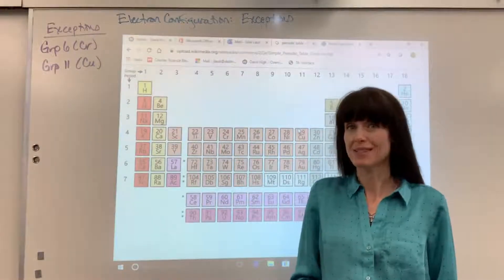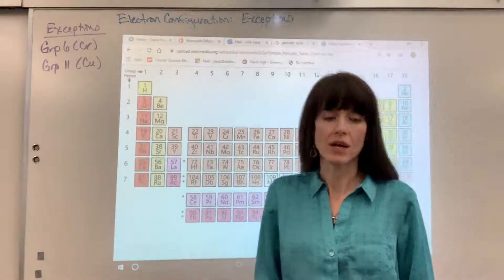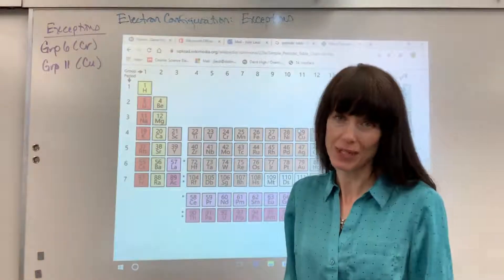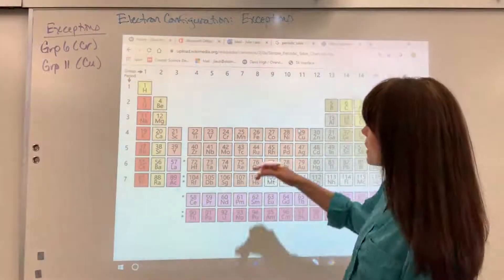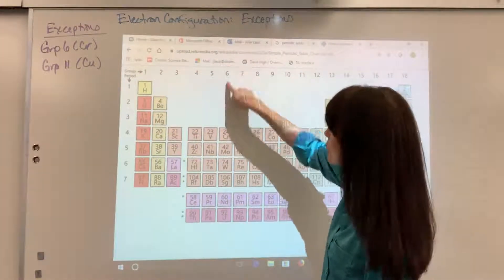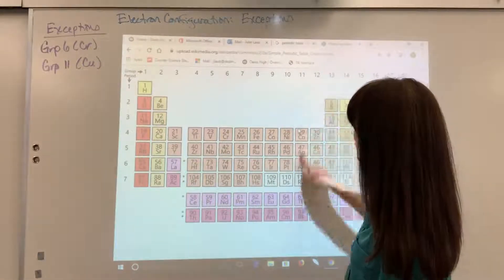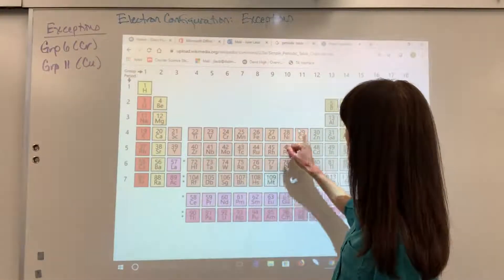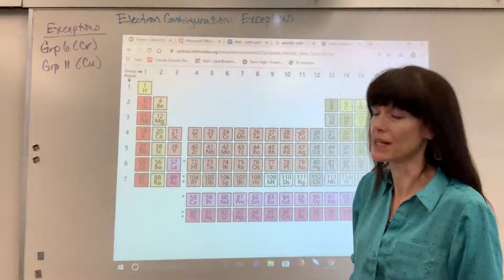There are a few exceptions on the electron configuration, something that you wouldn't expect. These exceptions are going to happen at group 6 and group 11. So I'm looking at the chromium and the copper to explain these.